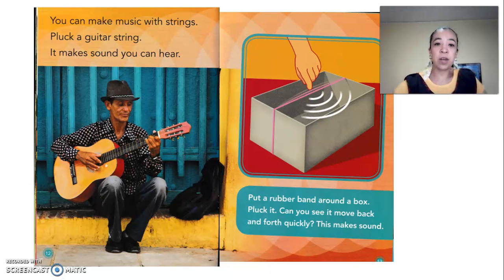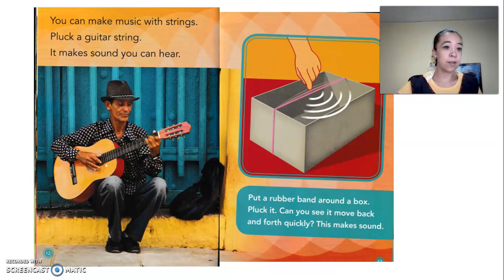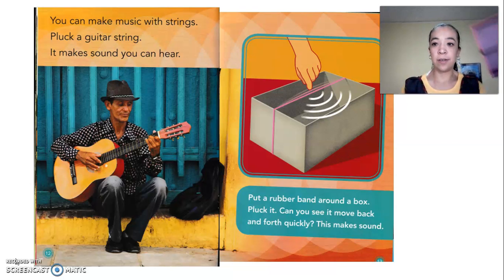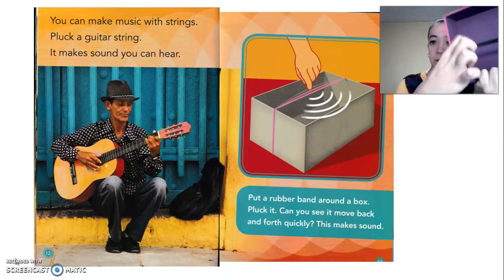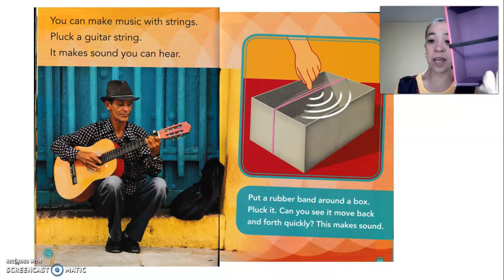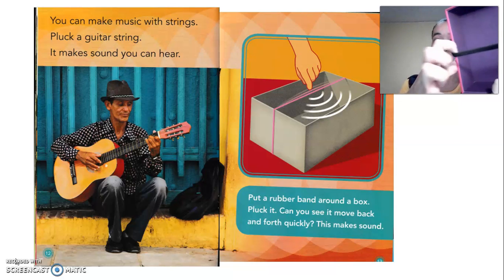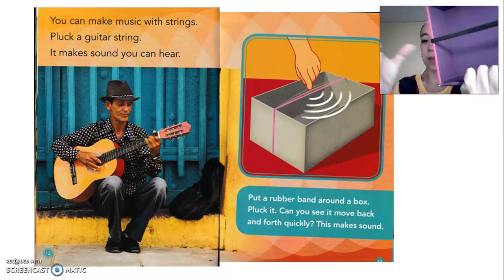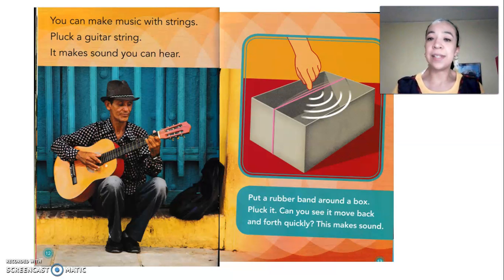Make music with strings. Pluck a guitar string — it makes a sound you can hear. Put a rubber band around a box. Pluck it. Can you see it move back and forth quickly? This makes sound.